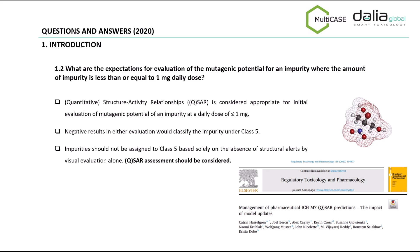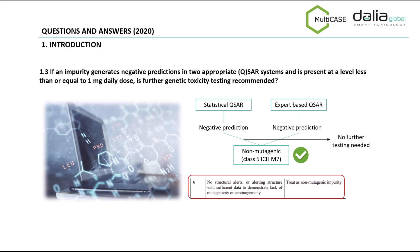The second question refers to the evaluation of impurities present at or below 1 mg. According to the Q&A document, QSAR is considered appropriate for the evaluation. Negative QSAR results could classify an impurity under class 5, which are non-mutagenic impurities. It is important to note that impurities should not be classified based only on the absence of structural alerts by visual evaluation alone. QSAR methods should always be performed. The third question refers to the need for additional studies when QSAR predictions are negative. According to the Q&A document, it is not necessary to perform any additional tests if the QSAR results are negative, meaning the impurity could be directly classified as non-mutagenic as long as QSAR results are negative and performed with a validated method.